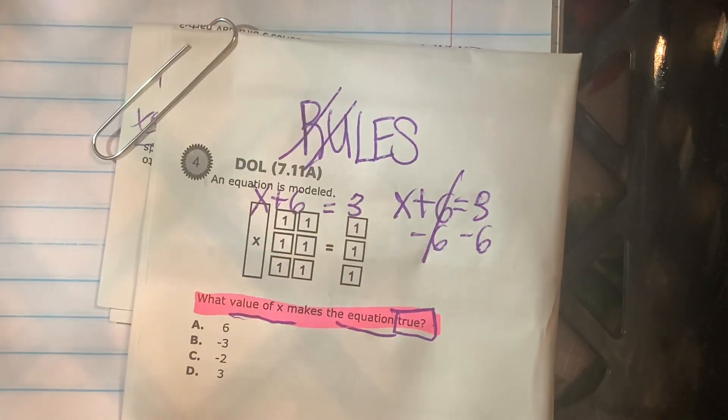Now the first step in this equation, I'm going to subtract 6 from both sides, because I'm trying to get the x by itself. All right, the 6s cancel out, and I'm left with x is equal to negative 3.